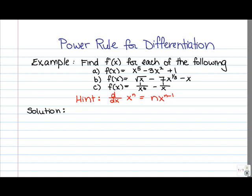So in part a, x to the 5 minus 3x squared plus 1. In part b, root x minus 7x to the 1 third minus x. And in part c, 1 over x to the 6 minus 1 over x.